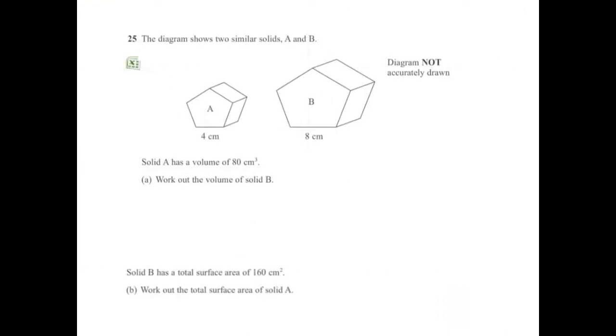The first key word is that these two shapes are similar. We can see that their lengths are in the ratio 1 to 2, so I immediately know that the areas are in the ratio 1 squared to 2 squared. And I'll just make a note of that and actually that's got my marks. So A is the smaller shape that has a volume of 80 and B has a volume that is 8 times bigger.